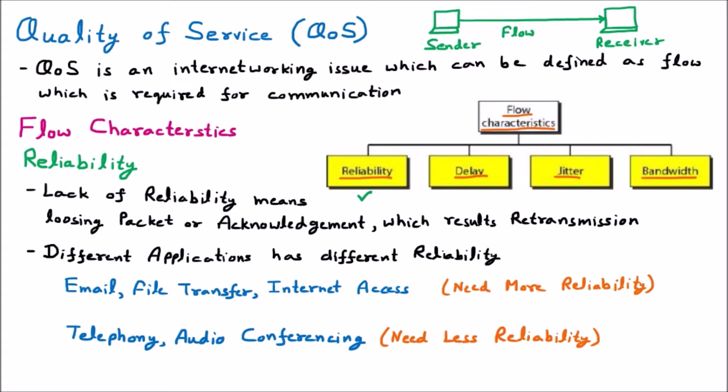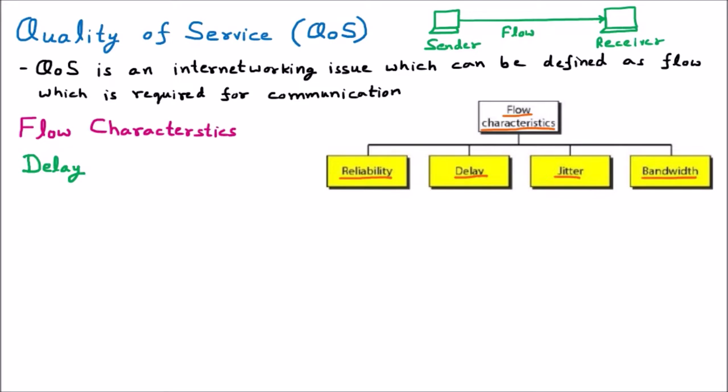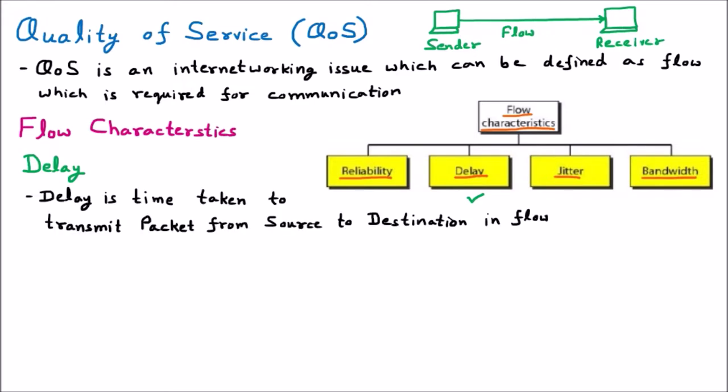The next flow characteristic is delay. Delay is the time taken to transmit a packet from source to destination in a flow. Whenever we send data from source to destination, how much time the packet takes from source to destination is called the delay. Delay can vary, as it depends on how long it takes to receive the data.